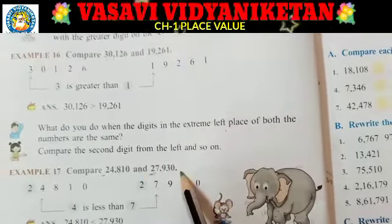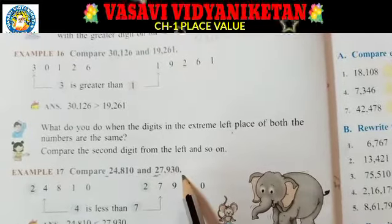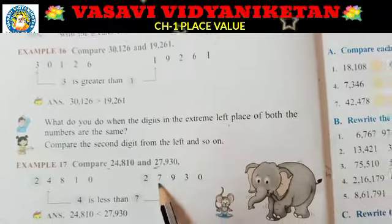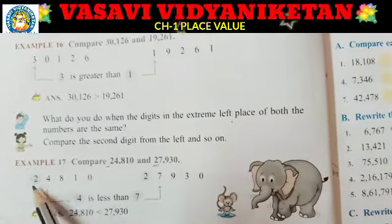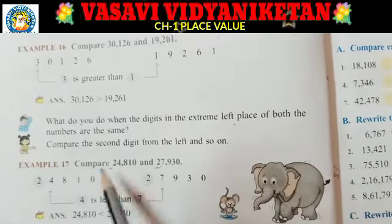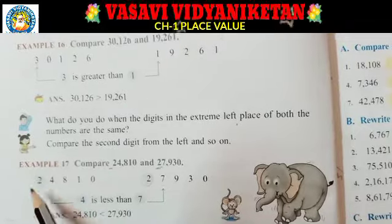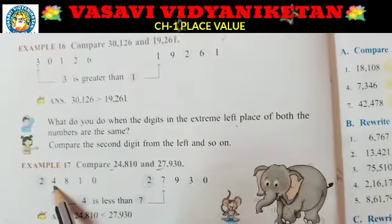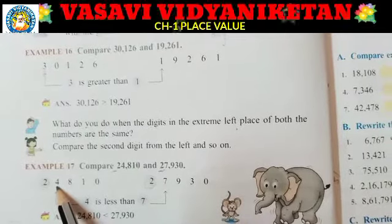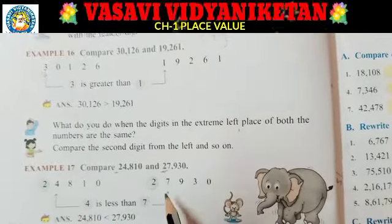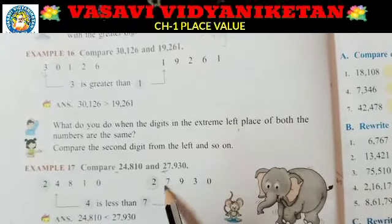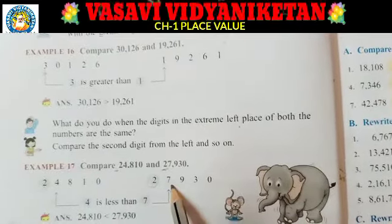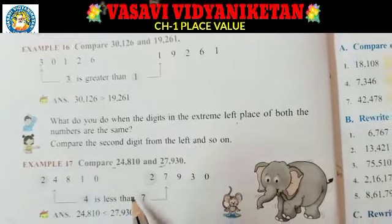So both are 5-digit numbers. Here 24,810 and 27,930 — here the first digit is 2 and here also 2. They are the same, so we move to the next place. Here 4 is there and here 7 is there. So 4 is less than 7.